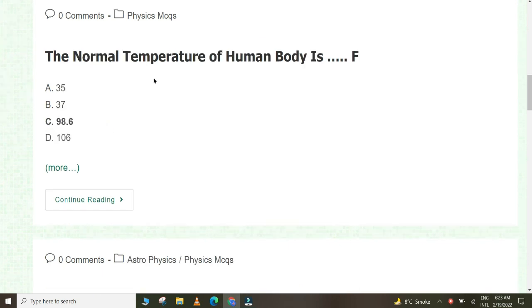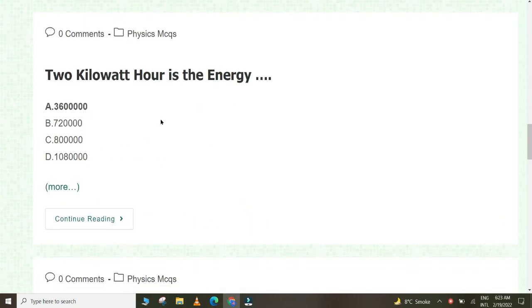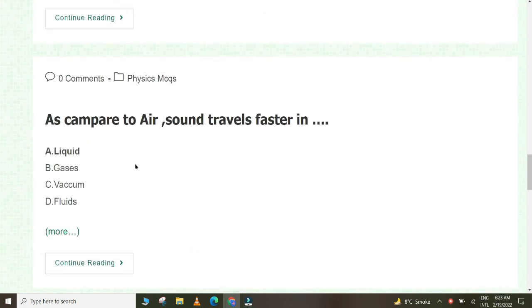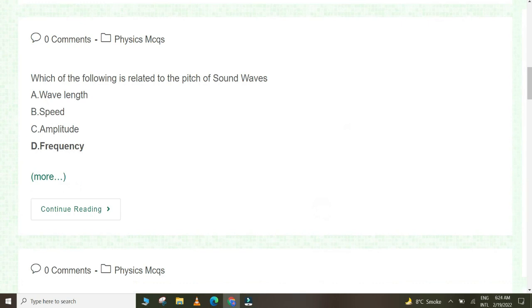Heat in a metal rod flows by the process of conduction. The normal temperature of human body is 98.6 Fahrenheit. The building block of the universe is galaxy. The largest unit of electricity is kilowatt. One kilowatt hour is the energy of 3,600,000 joules. An example of longitudinal wave is slinky spring. As compared to air, sound travels faster in liquid. A human ear can hear a sound only if its frequency lies between 20 to 20,000 hertz.